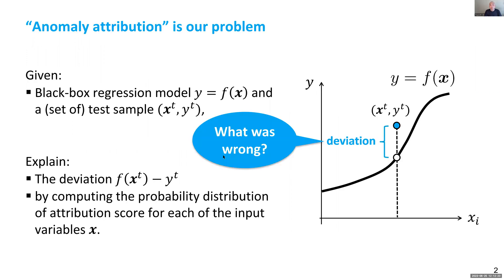So this paper is about anomaly attribution. Given a black box regression function y equals f of x and the test sample x super t and y super t, your task is to explain the observed deviation f of x minus y by computing the probability distribution of attribution score for each of the input variables.